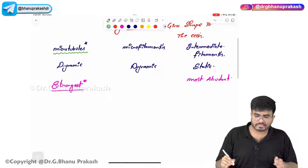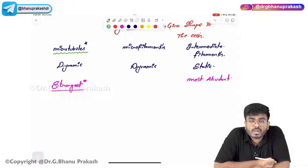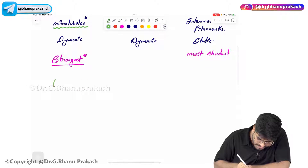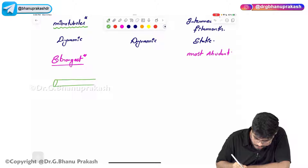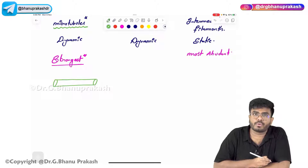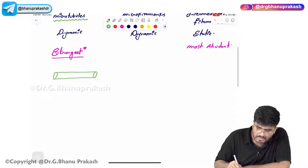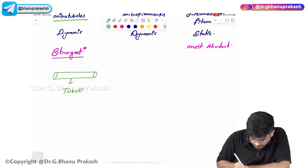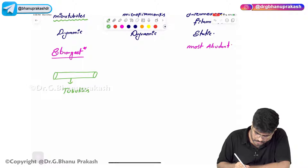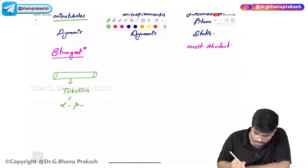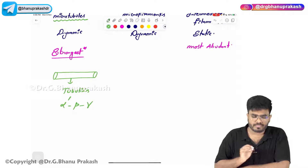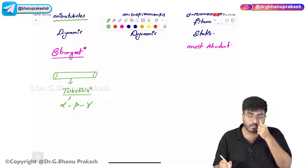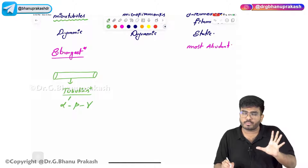Microtubules are made up of proteins called tubulins. There are different types of tubulins: alpha tubulin, beta tubulin, and gamma tubulin. So microtubules are made up of a protein called tubulin.